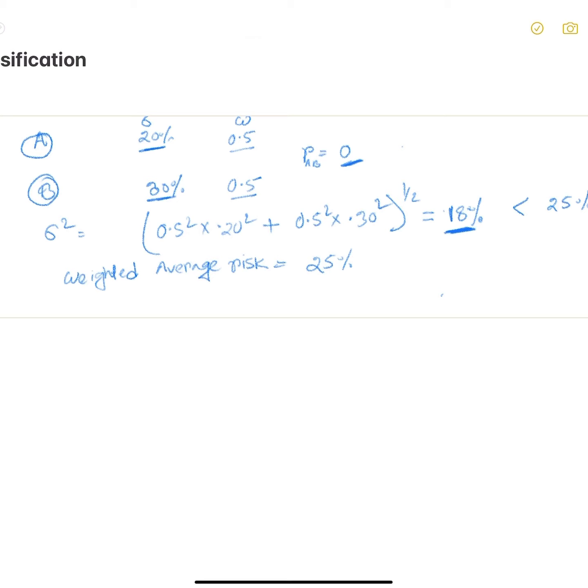On the other hand, if these two assets had perfectly positive correlation, which means they had positive one correlation, the overall portfolio risk would be the weighted average of individual assets risk, which means the overall portfolio risk would have been 25%.